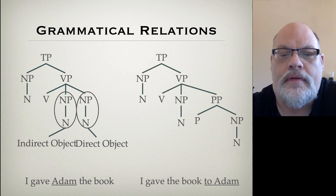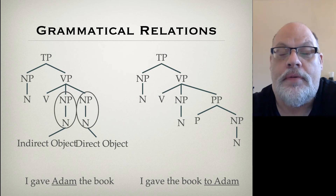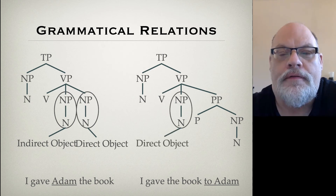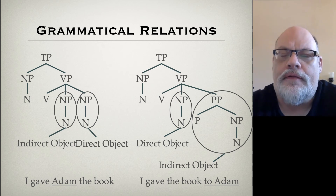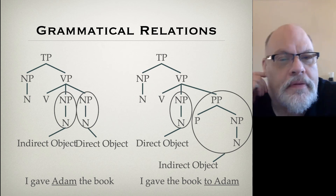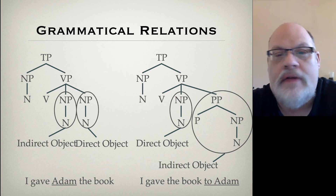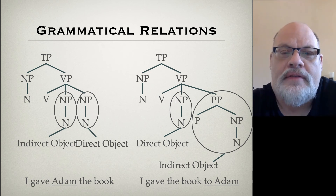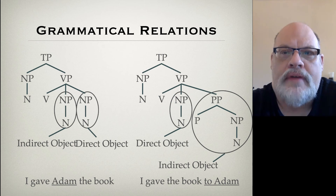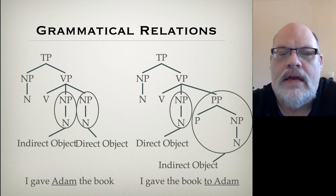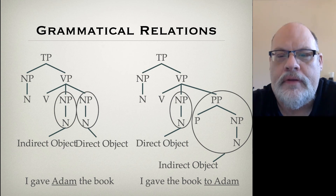For sentences with prepositional phrases in them, if you have a noun phrase followed by a prepositional phrase — like 'I gave the book to Adam' — the PP is the indirect object and the noun phrase is the direct object. You have to be a little careful here, because not all prepositional phrases are indirect objects. For example, if I said 'I saw a bill on Saturday,' 'on Saturday' is not an indirect object, because the verb 'see' is not a ditransitive verb. Similarly, 'I ate the soup with a fork' — 'with a fork' is not an indirect object, because 'eat' is not a ditransitive verb. So just be very careful about that.